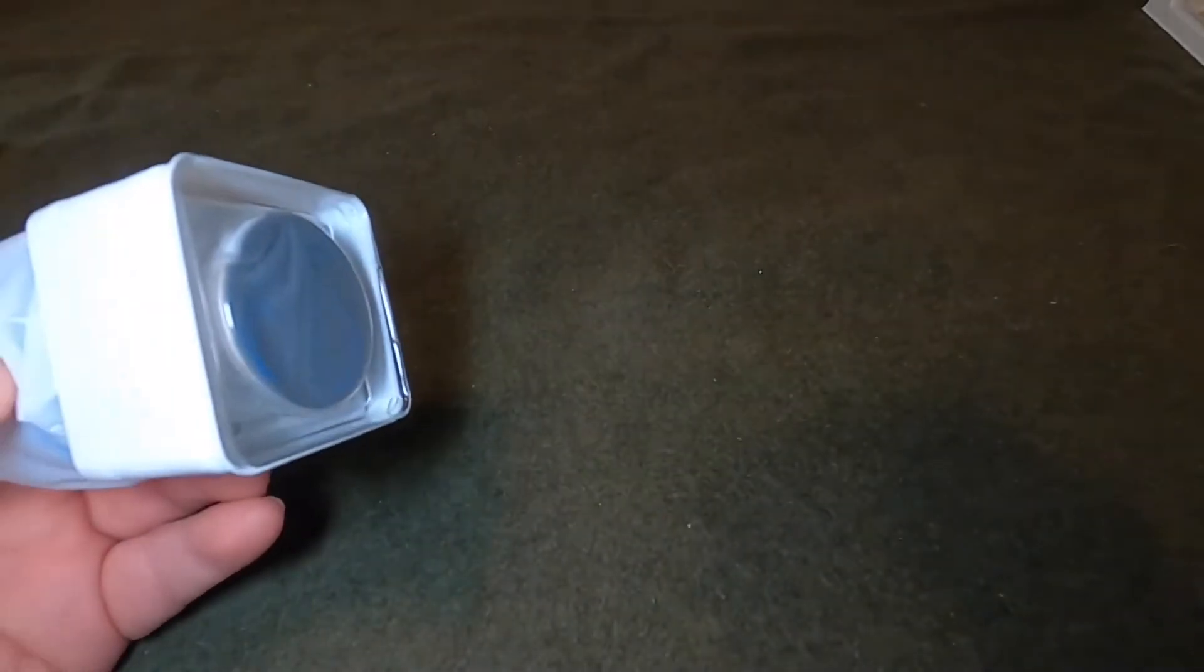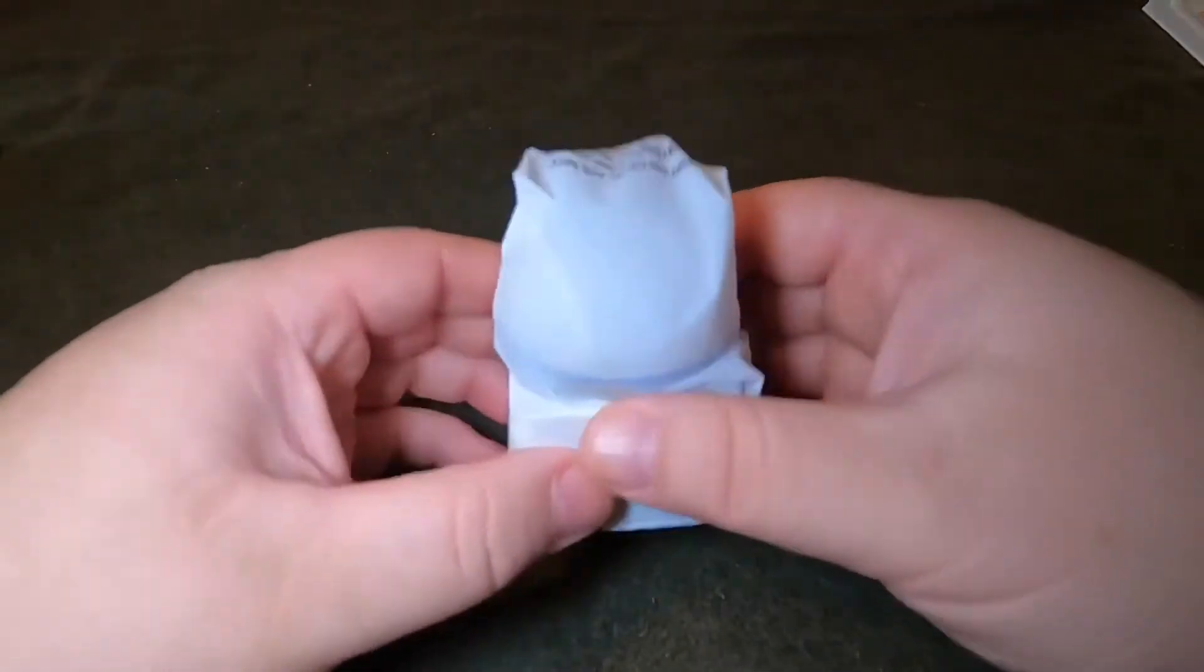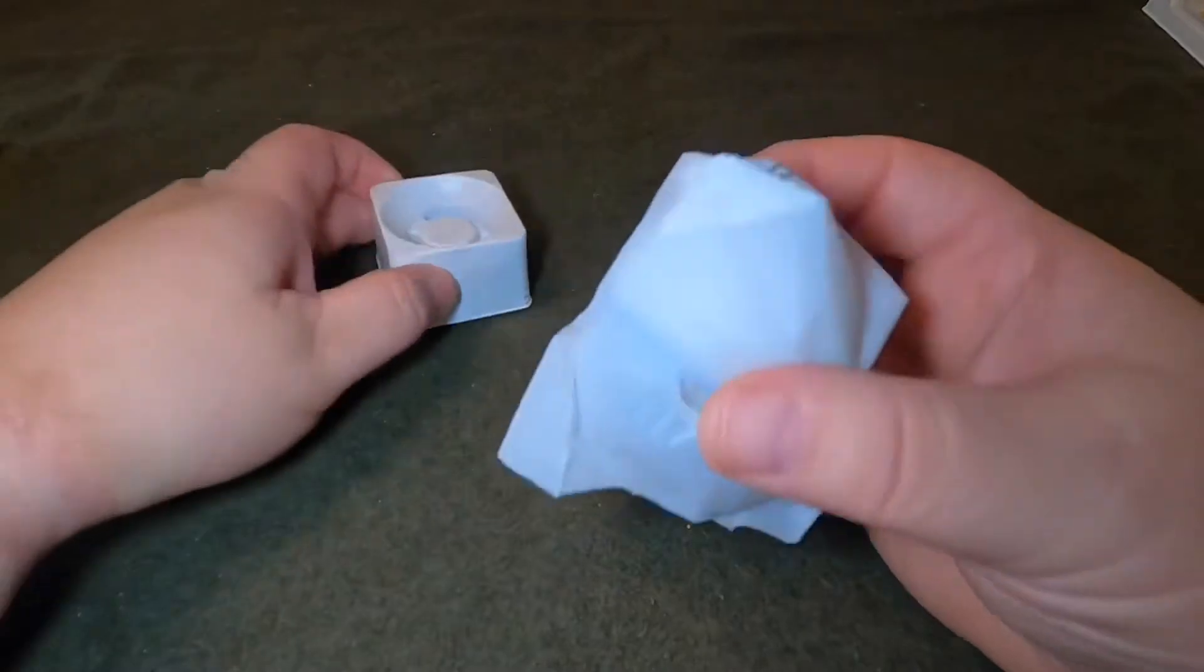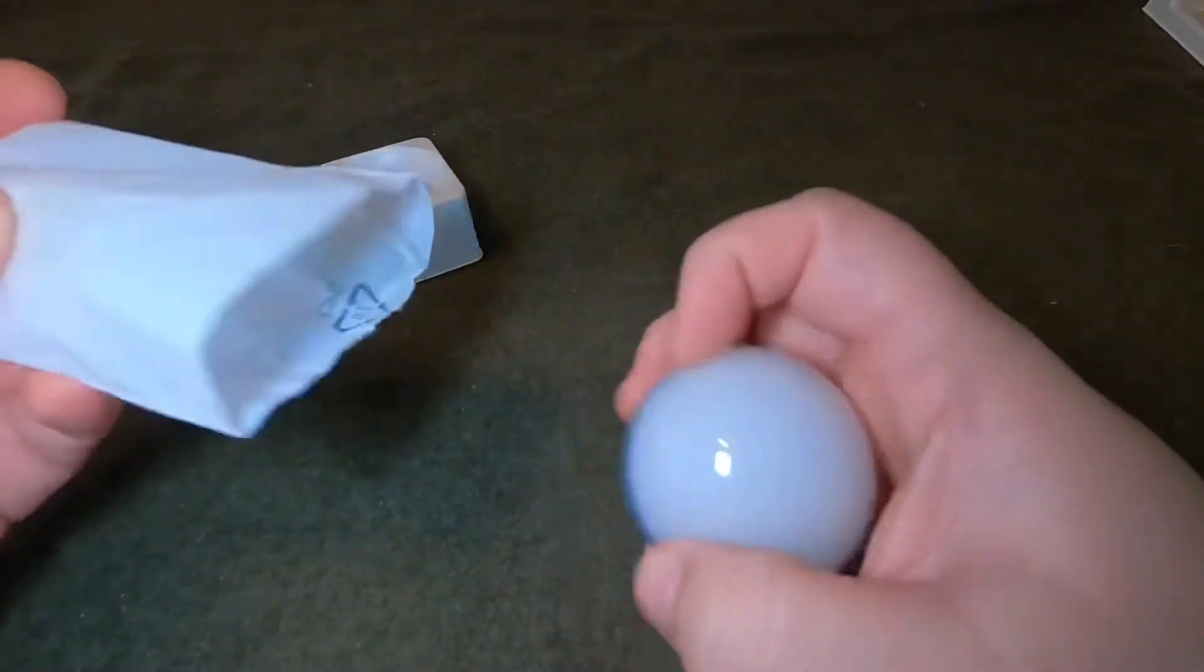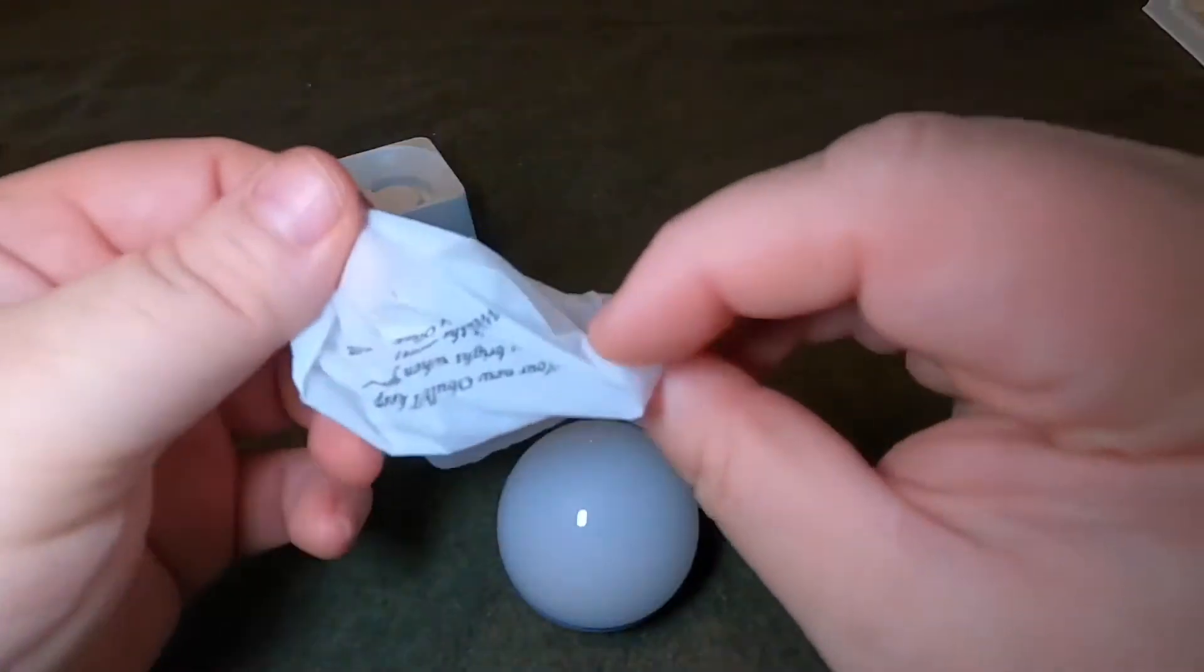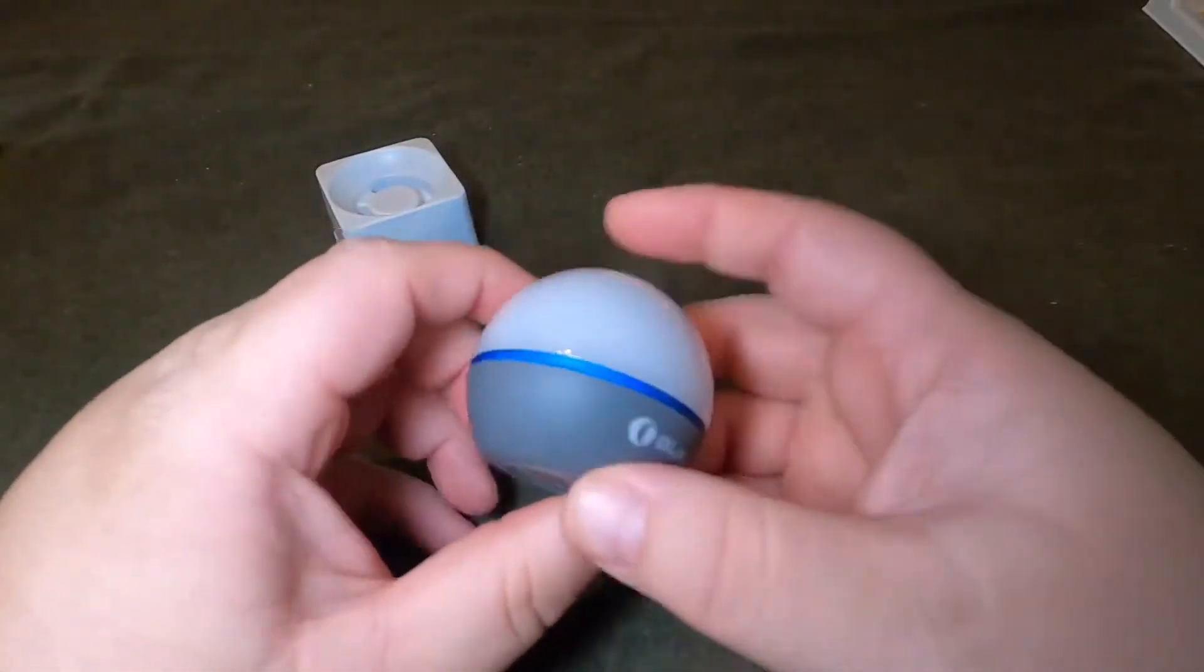So looks like everything came out in one package. This is the O-Bulb wrapped in plastic. Set this to the side. Here it is.